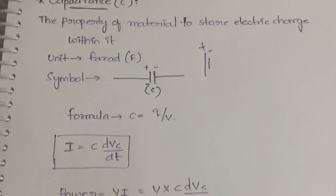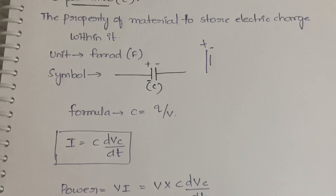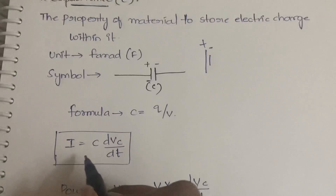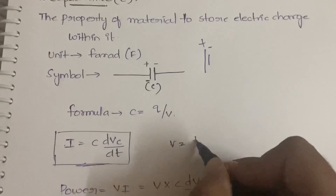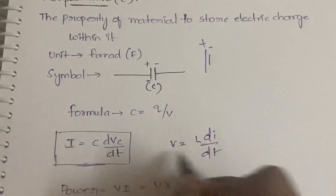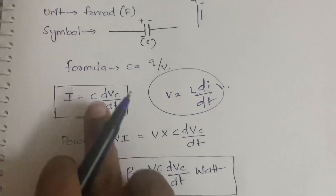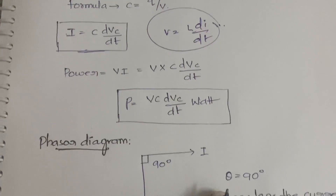The formula for capacitance is C equals Q over V, and another formula is I equals C times dVc/dt. To avoid confusion between inductance and capacitance formulas: in inductance V equals L times dI/dt, while in capacitance the voltage and current terms are swapped — I equals C times dVc/dt. The power formula is P equals Vc times C times dVc/dt.